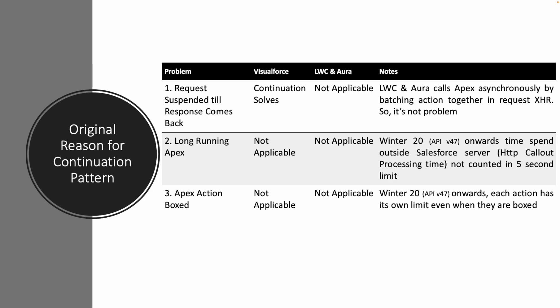The third reason applies more specifically to LWC and Aura — not the Visualforce page. When you make multiple requests to server-side code, Salesforce boxes the requests together and makes a single call to the Apex server to improve performance. In that case, if multiple actions are happening on the LWC or Aura side, they would be sharing the same governor limits. But again, after Winter 20 — API 47 — each action has its own limit.